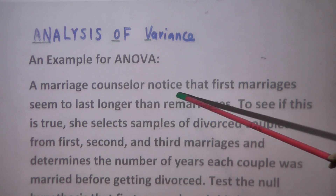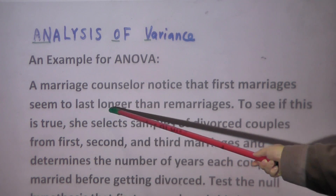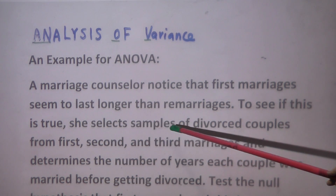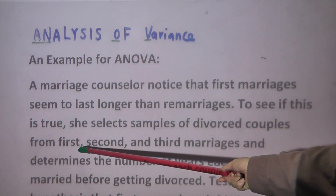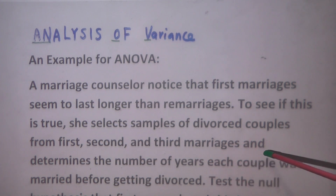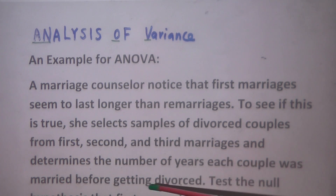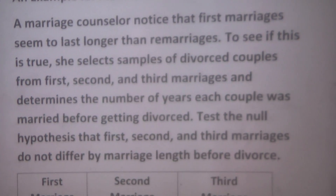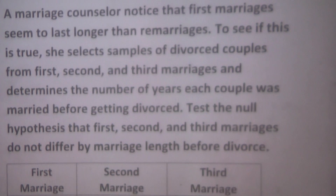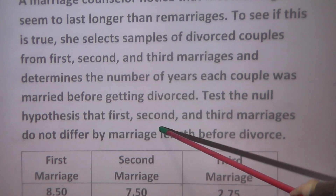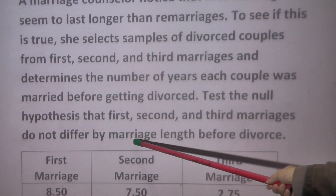A marriage counselor noticed that first marriages seem to last longer than remarriages. To see if this is true, she selects samples of divorced couples from first, second, and third marriages, and determines the number of years each couple was married before getting divorced. Test the null hypothesis that first, second, and third marriages do not differ by marriage length before divorce.